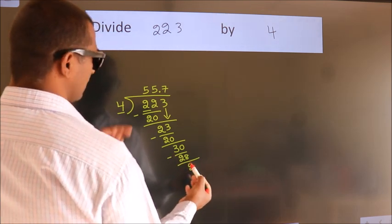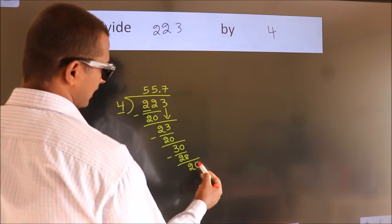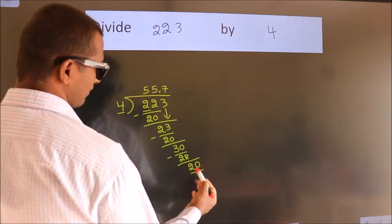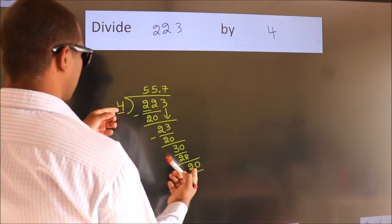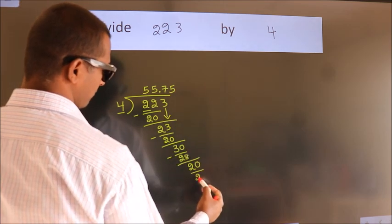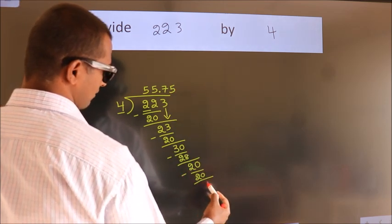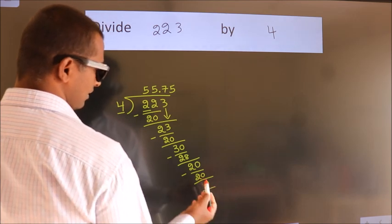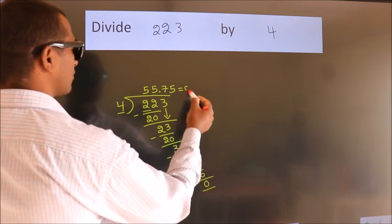After this, we already have the decimal, so directly take 0, giving us 20. When do we get 20 in the fourth table? 4 fives, 20. Now we subtract and get 0. We got remainder 0, so this is our quotient.